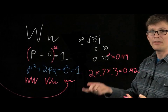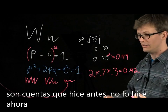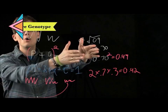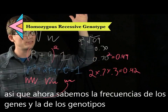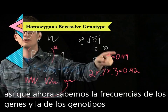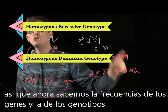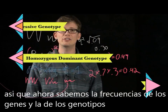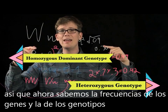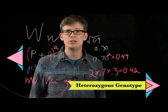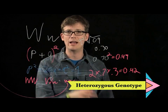So 9% of the population is homozygous recessive, 49% homozygous dominant, and 42% heterozygous — displaying wet earwax, but with that little w in there as well.